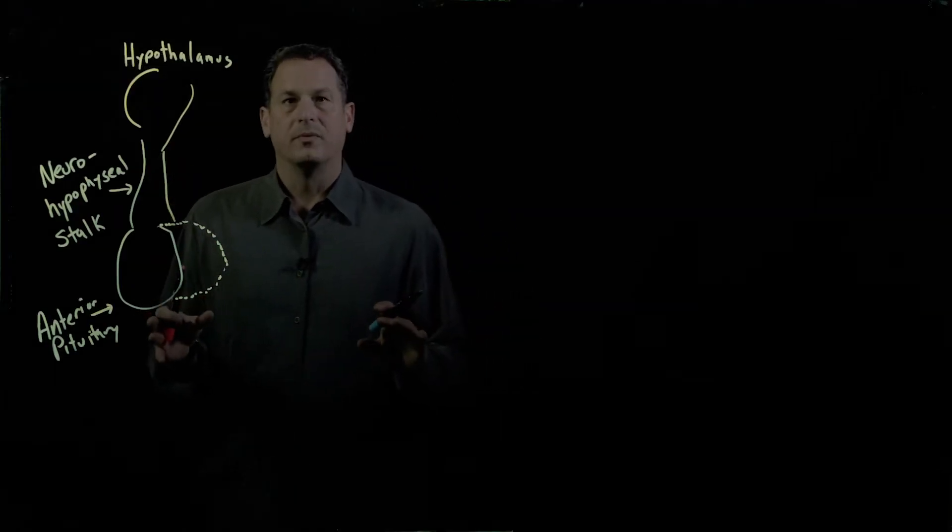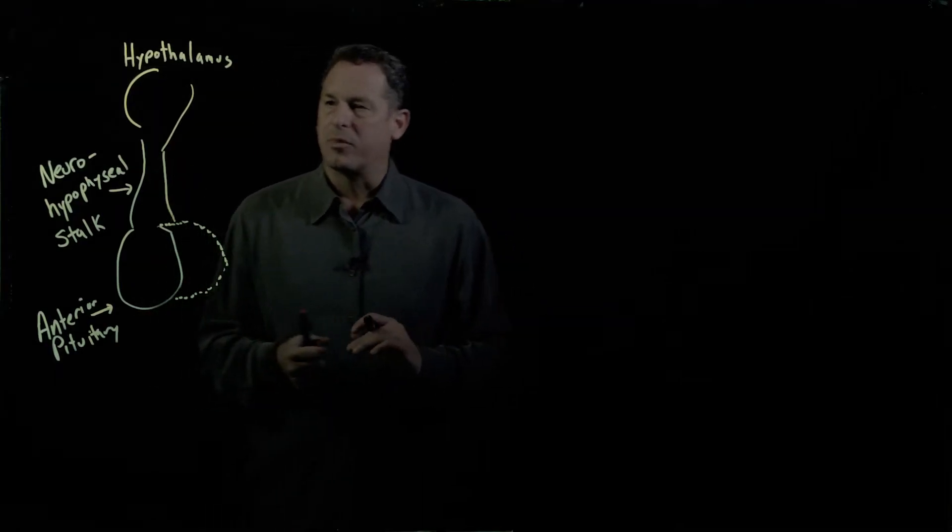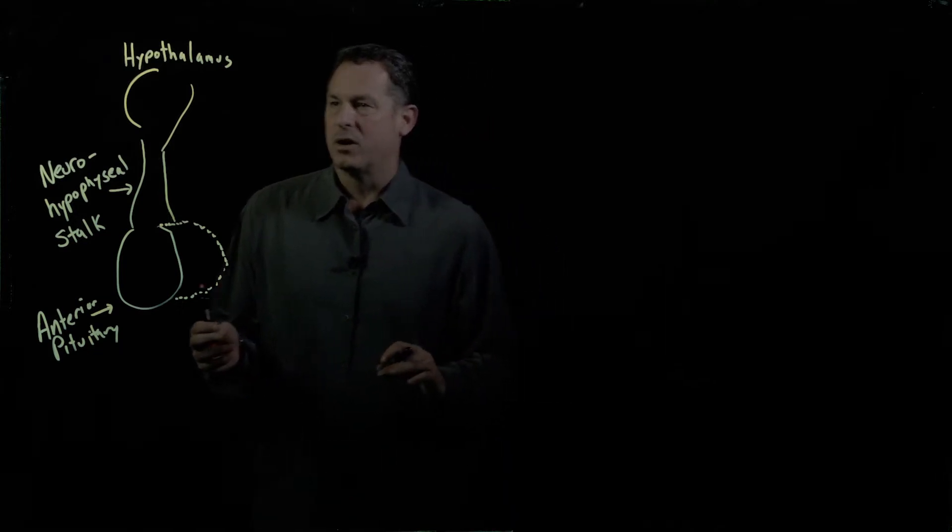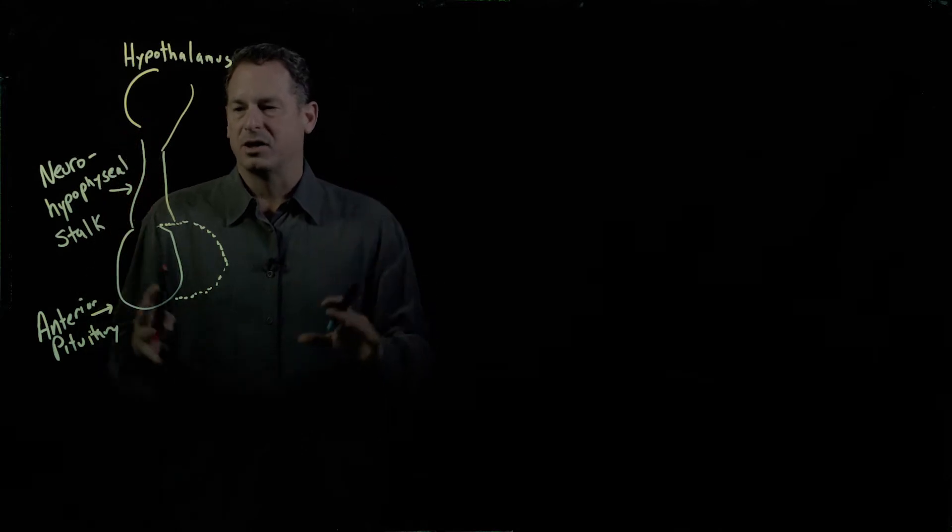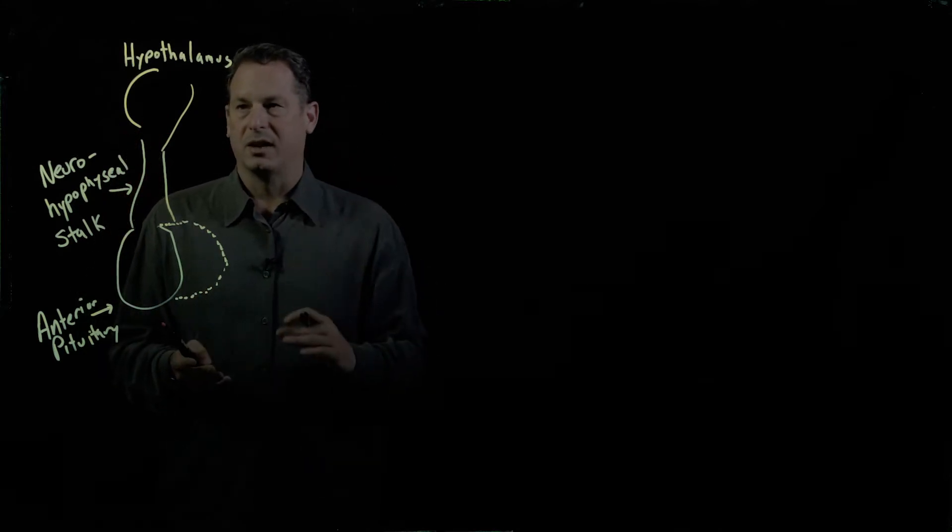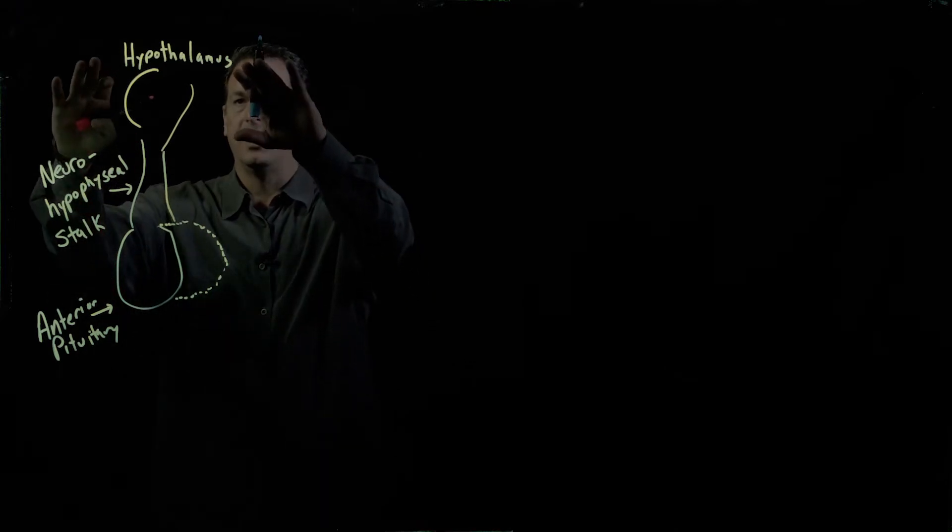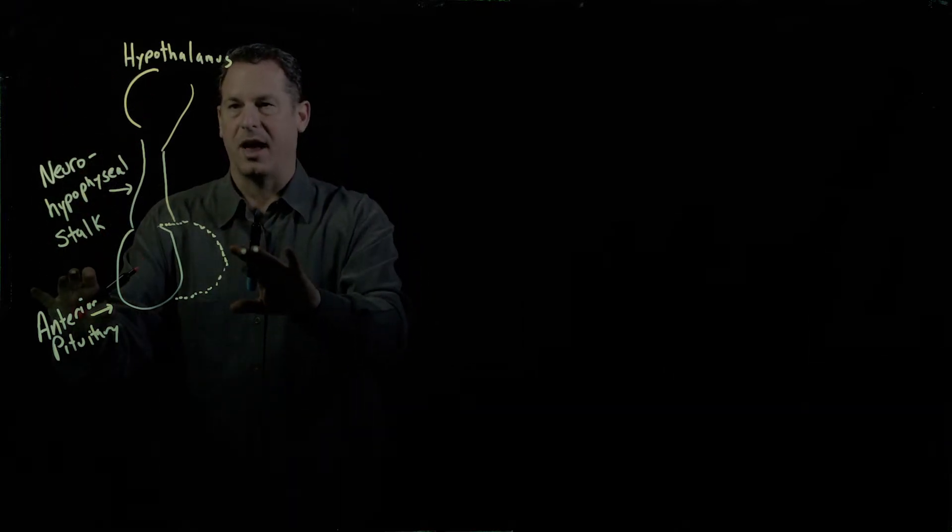Let's discuss cortisol, one of the primary stress hormones. In order to do this, we need to talk about its several tiered regulation, which is controlled at the level of the hypothalamus and the pituitary gland.